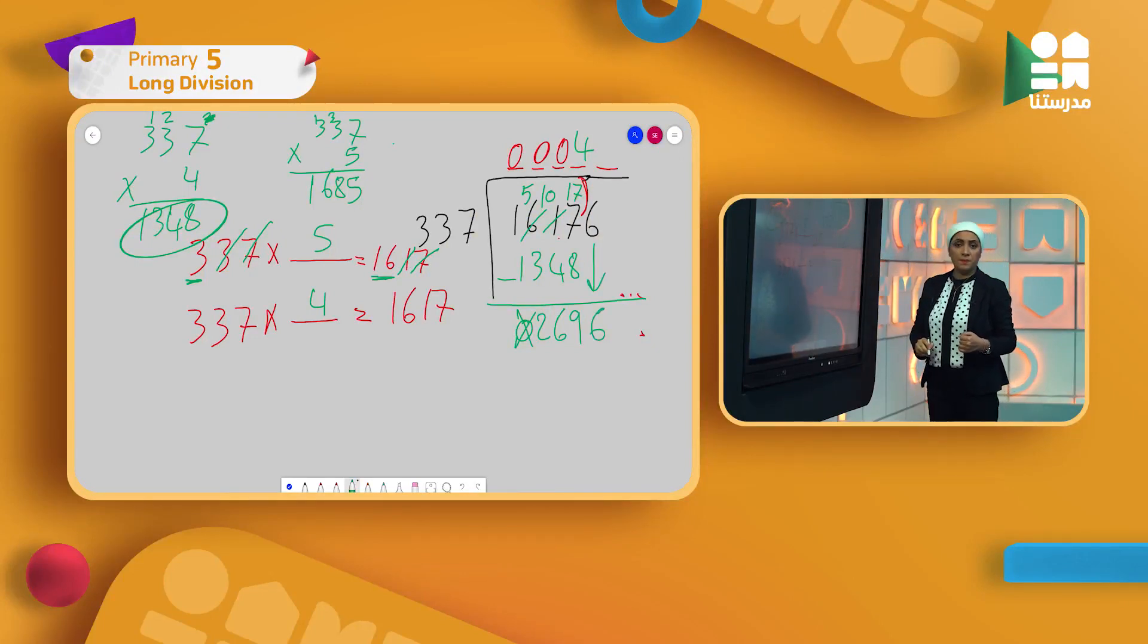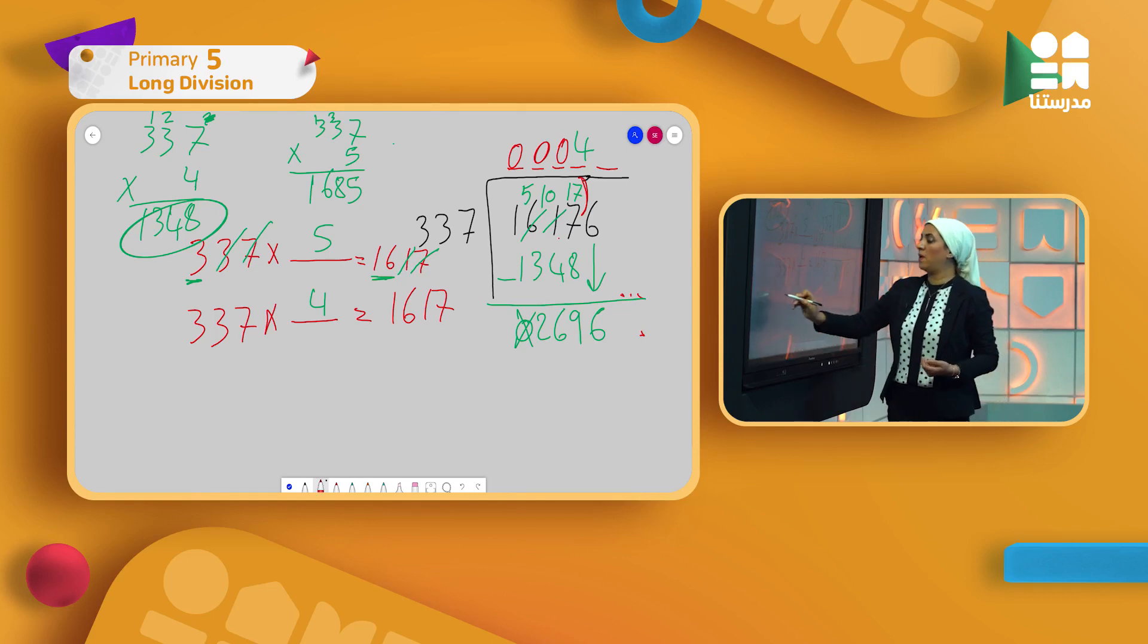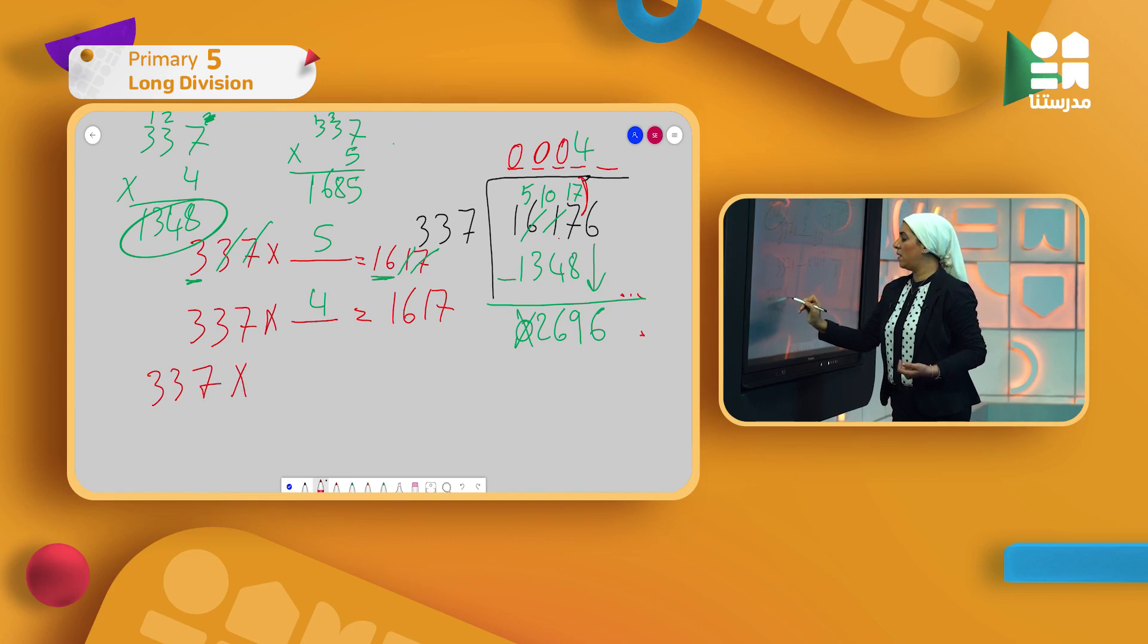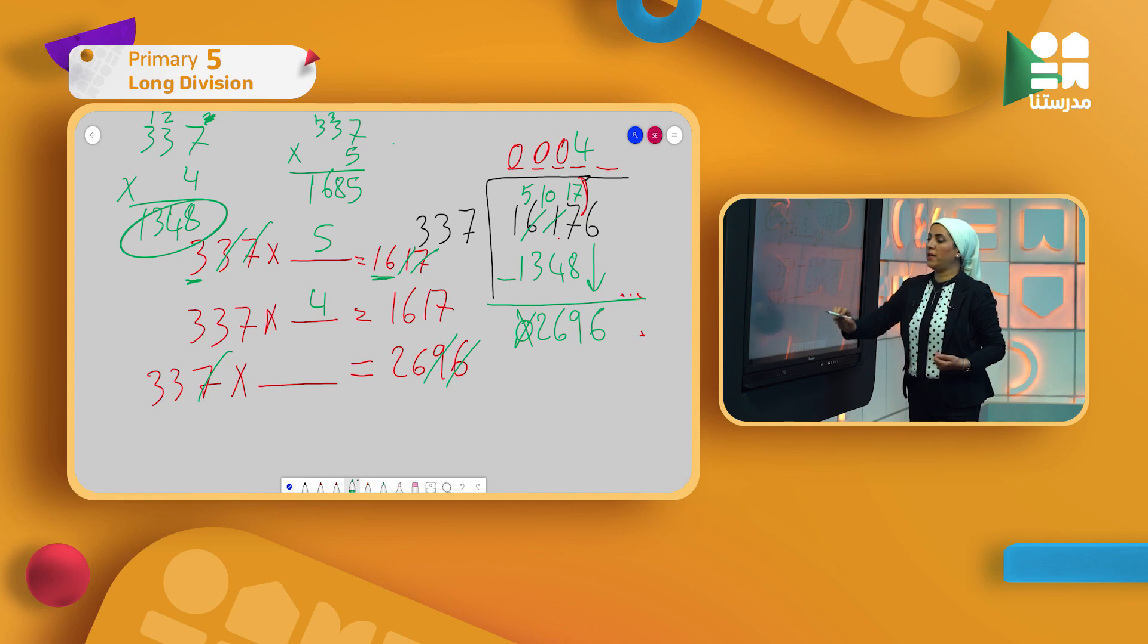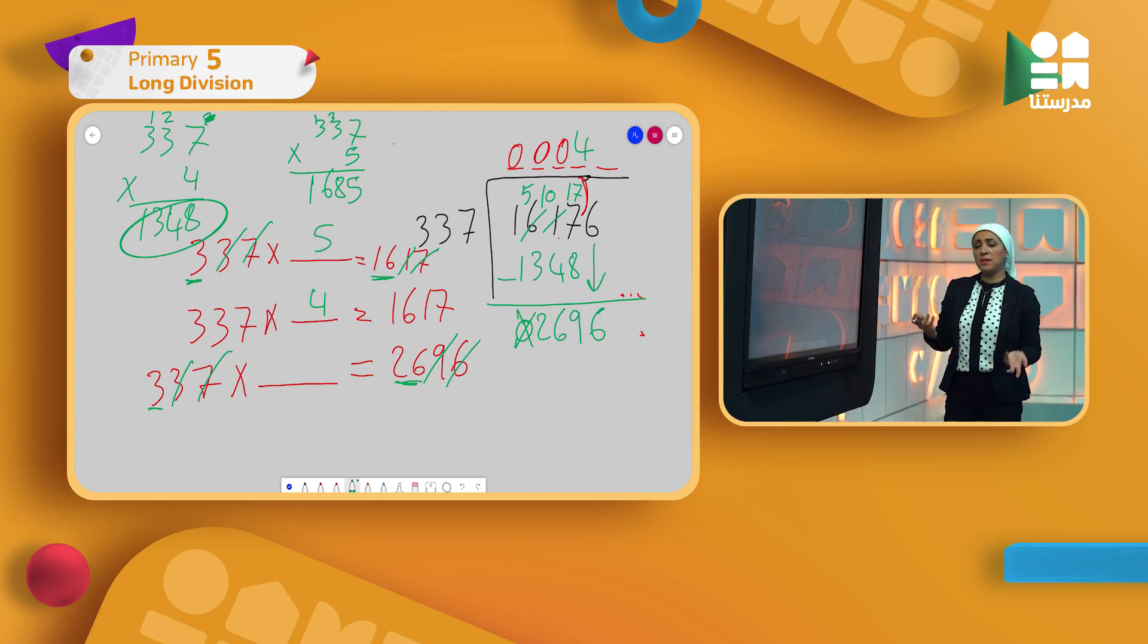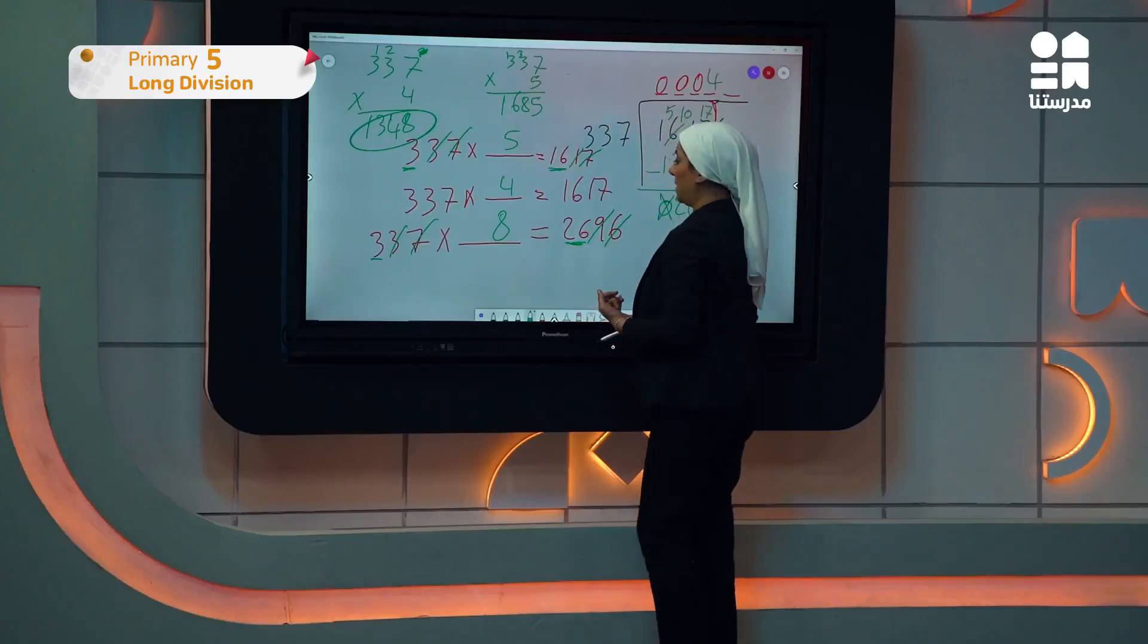The last step is the brother. I'll bring down the last digit that I have, which is the 6. I will repeat the same steps. I want to know 2696 divided by 337 gives me what. 337 times what gives me 2696? Cancel the 6 with the 7, cancel the 9 with the 3. I have now 26 and 3. 3 times what gives me 26?